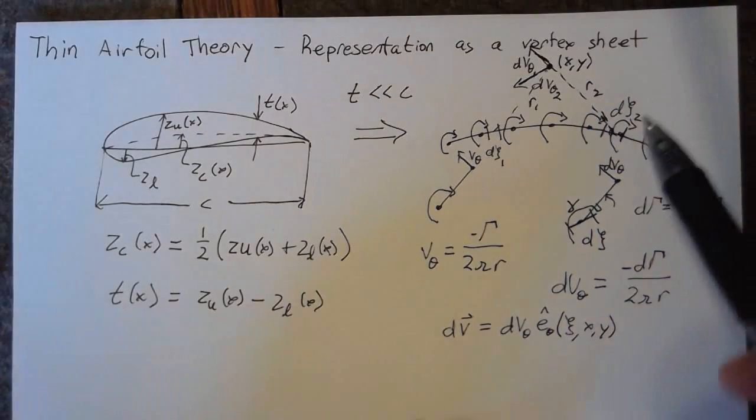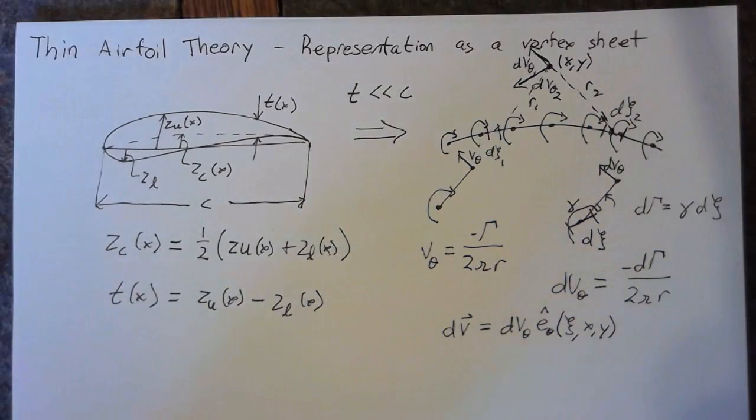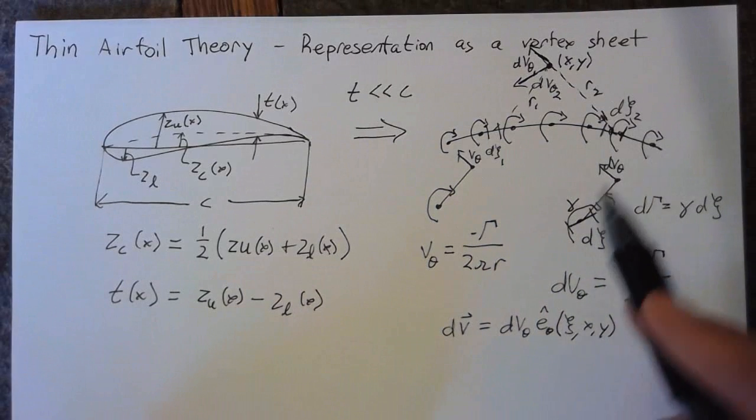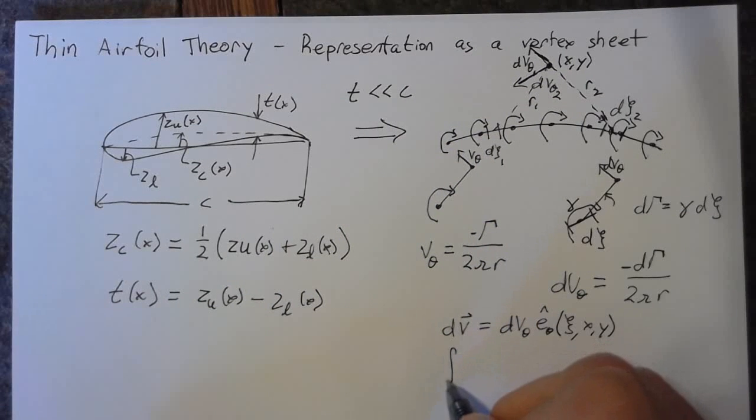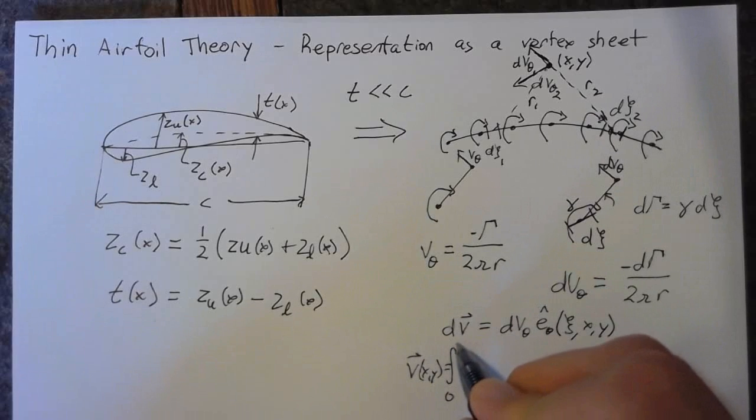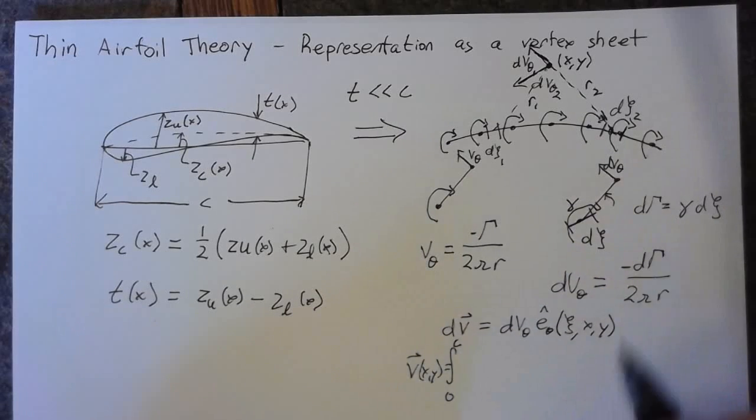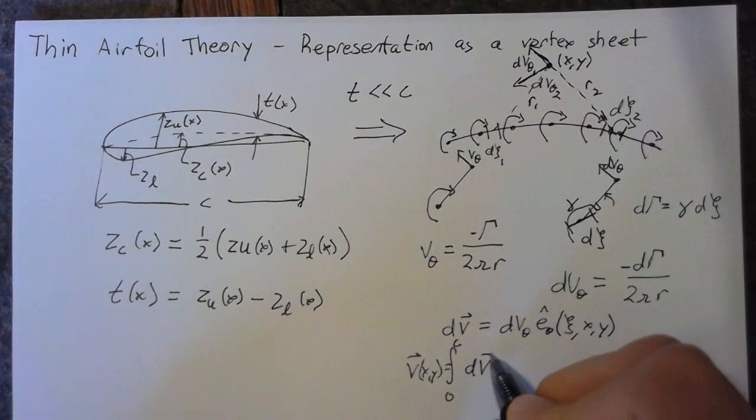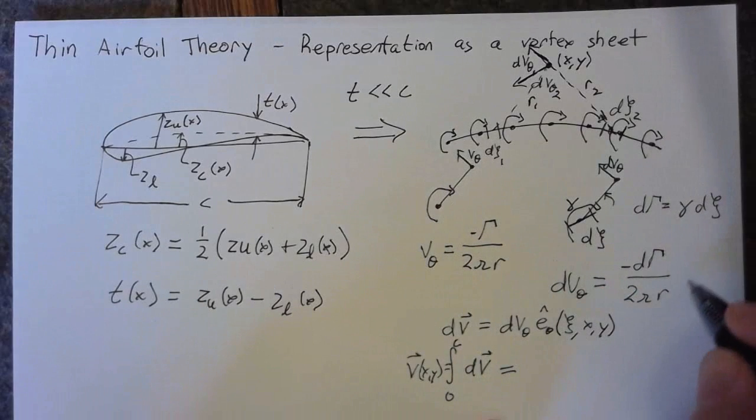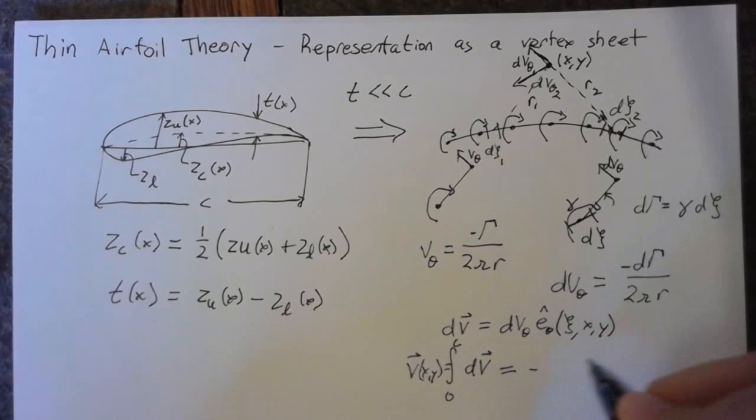So obviously this is a very complicated way of doing things. We're going to be simplifying this down coming up. In general, our entire velocity at some point x and y is going to be the integral from 0 to c, so across the entire chord, of our d v, which is going to be the integral, or the negative integral from 0 to c.